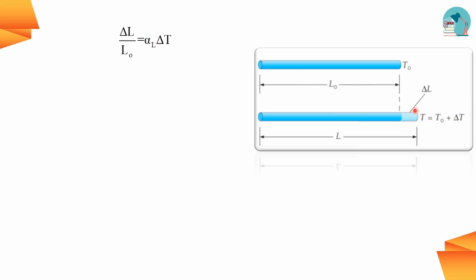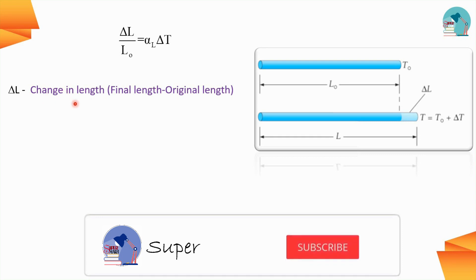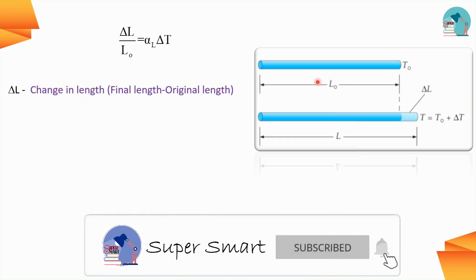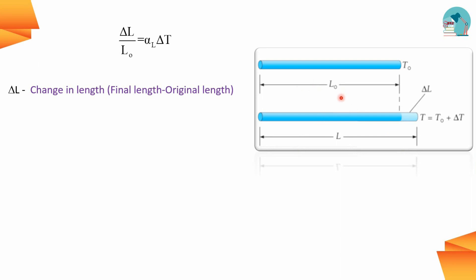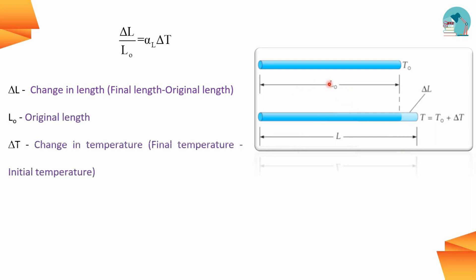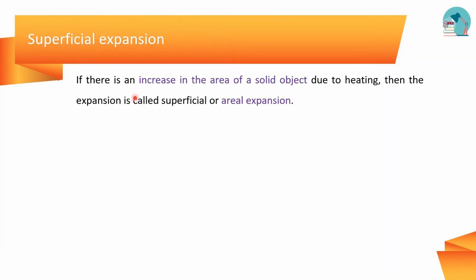Alpha L is the linear coefficient, Delta T is change in temperature, Delta L is change in length — that is final length minus original length L0. Lt is the final temperature, T0 is the initial temperature. Delta T, and Alpha L is the coefficient of linear expansion. Superficial expansion is the expansion of area, also called aerial expansion.